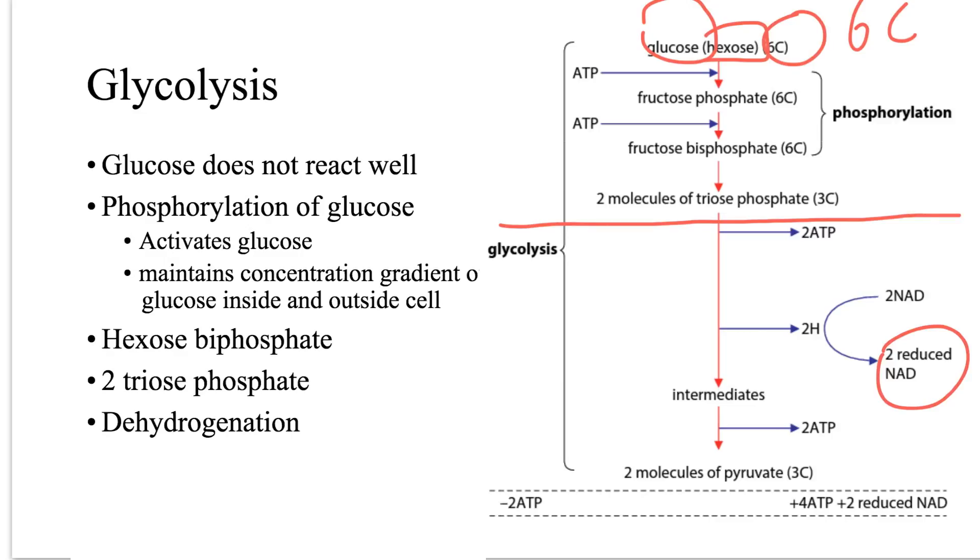And the hydrogens carried by reduced NAD can easily be transferred to other molecules and are used in oxidative phosphorylation to generate ATP, that we will see in another video. You can also see in the second stage that two ATP molecules here and two ATP there. So totally four ATP molecules are formed. And these ATP molecules are formed by the substrate level phosphorylation of ADP with inorganic phosphate.